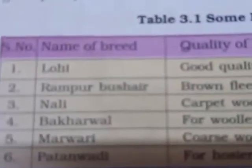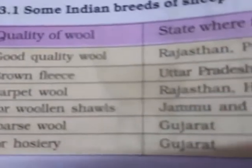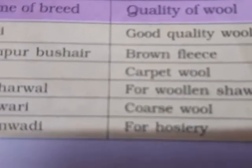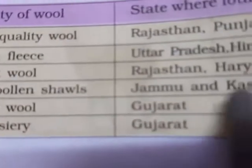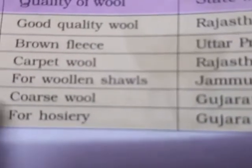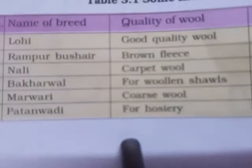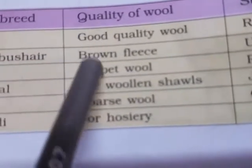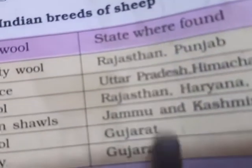Bhakharwal is found in Jammu and Kashmir, in the hilly regions, and its wool is mainly used for making woolen shawls. Marwari produces coarse wool — rough, not soft wool — and is found in Gujarat. Patanwadi wool is used for hosiery material and is also found in Gujarat. These are the main breeds of sheep in our country, along with the quality of wool they produce and the regions where they are found.